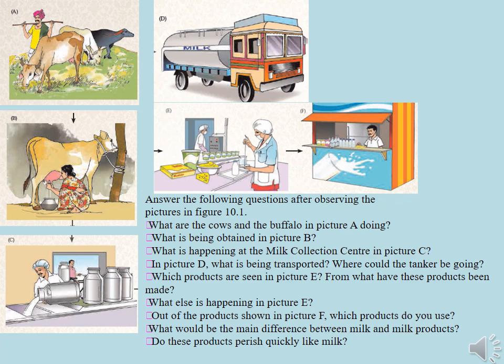What else is happening in picture E? Out of the products shown in picture F, which products do you use? What would be the main difference between milk and milk products? Do these products perish quickly like milk?